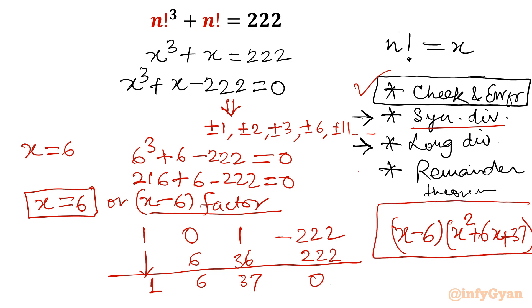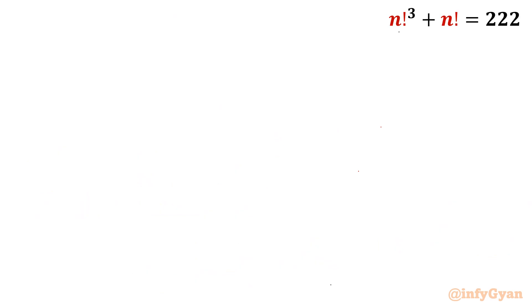So factors of x cube plus x minus 222 will become x minus 6 in one bracket and the second bracket would be quadratic: x square plus 6x plus 37. Task is almost done. Let me take the second method which is long division.